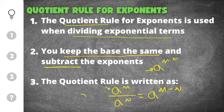You will notice that our base of a stays the same in the answer — so whatever a is, it will remain the same. We keep it and it will remain the same. And then whatever the exponents are, you will subtract. For example, if m is 10 and n is 3, you would do 10 minus 3 because we're subtracting the exponents.